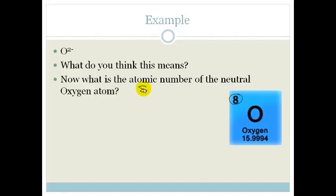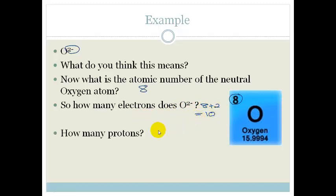So the atomic number of the neutral oxygen atom is 8. But do we see here that what have we done? We have gained electrons. So in fact, how many electrons does it have is 8 plus 2, which equals 10 electrons. How many protons does it have?